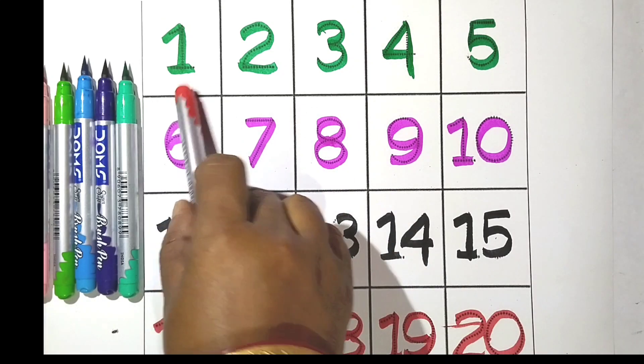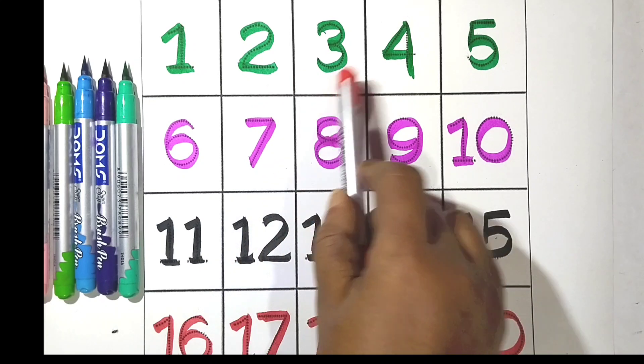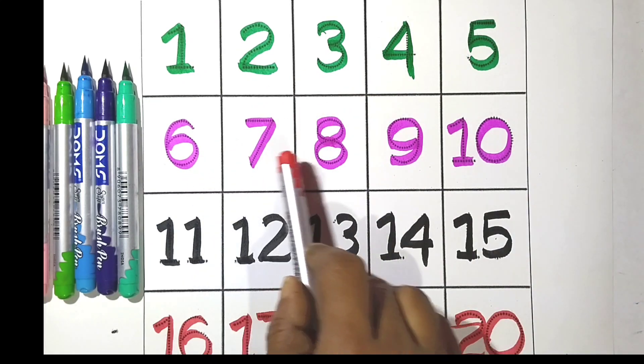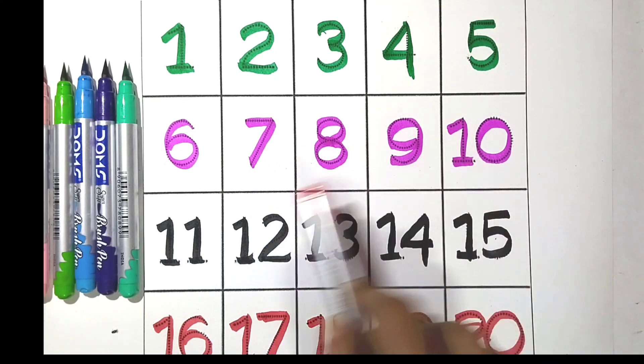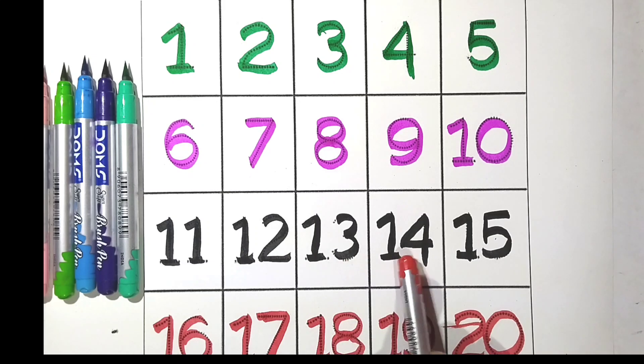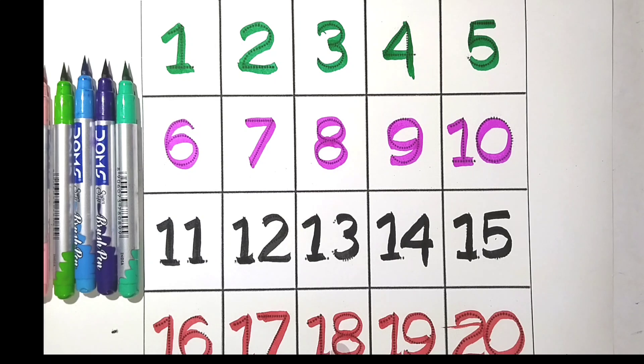1, 2, 3, 4, 5, 6, 7, 8, 9, 10, 11, 12, 13, 14, 15, 16, 17, 18, 19, 20.